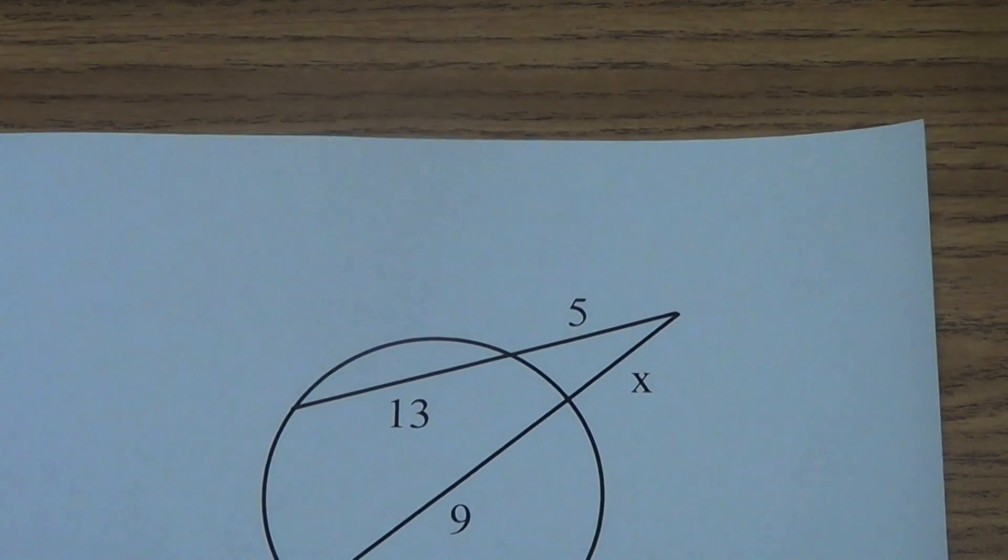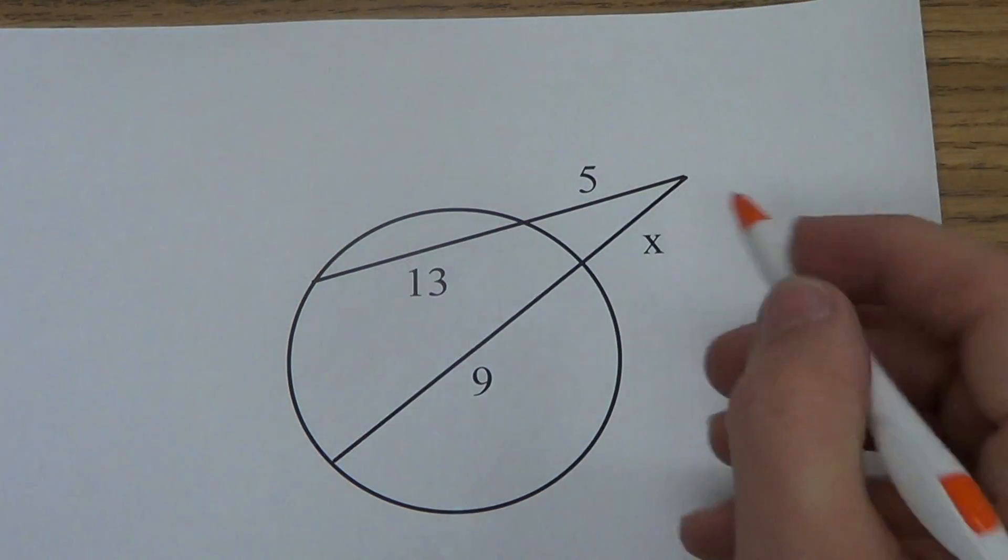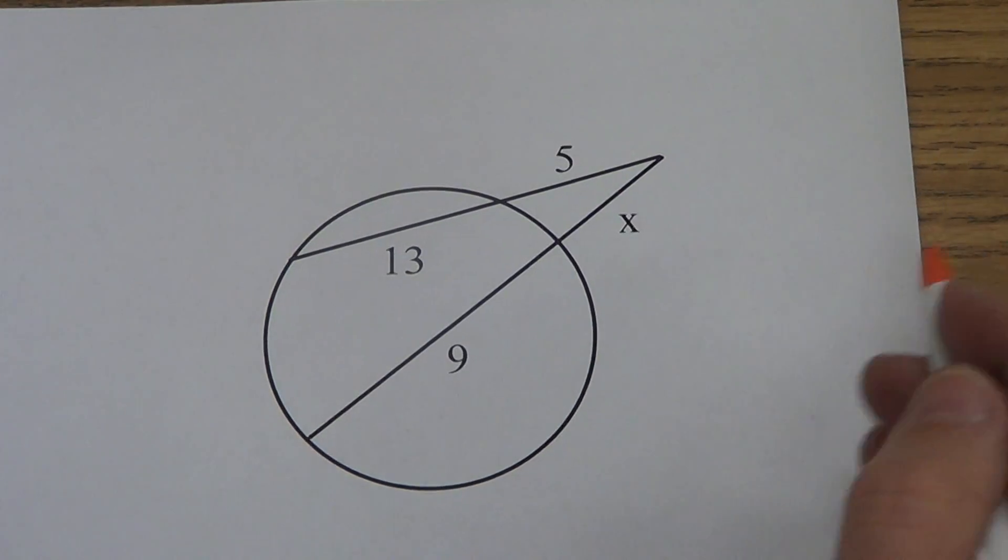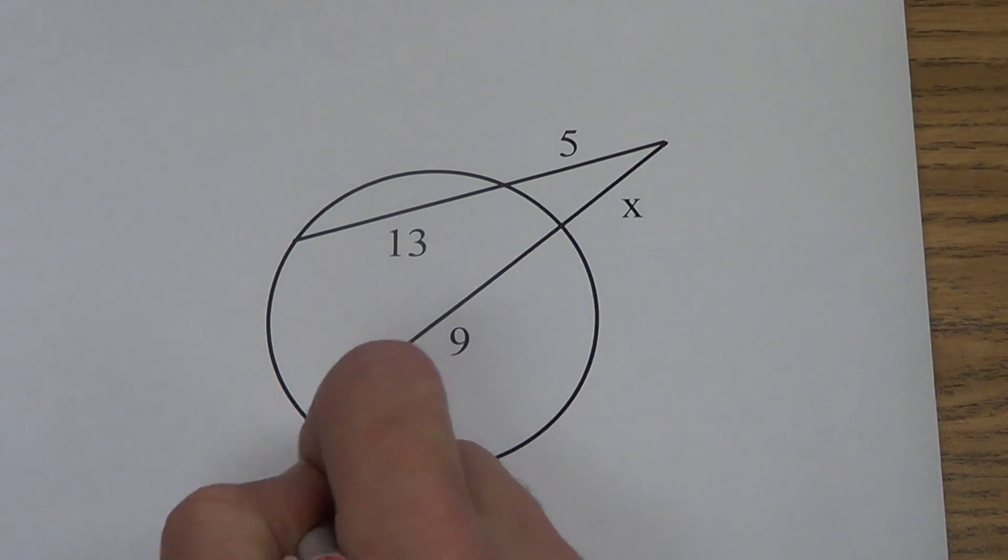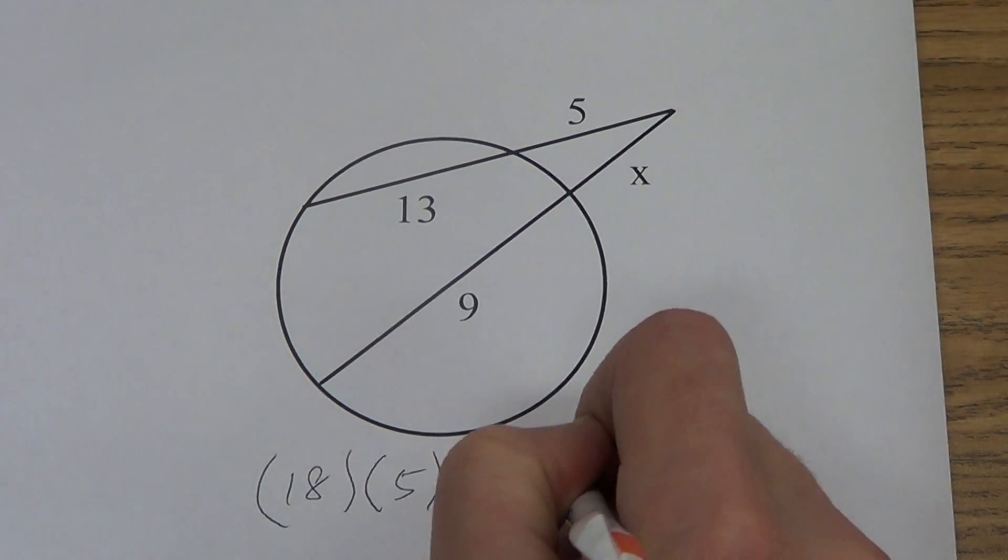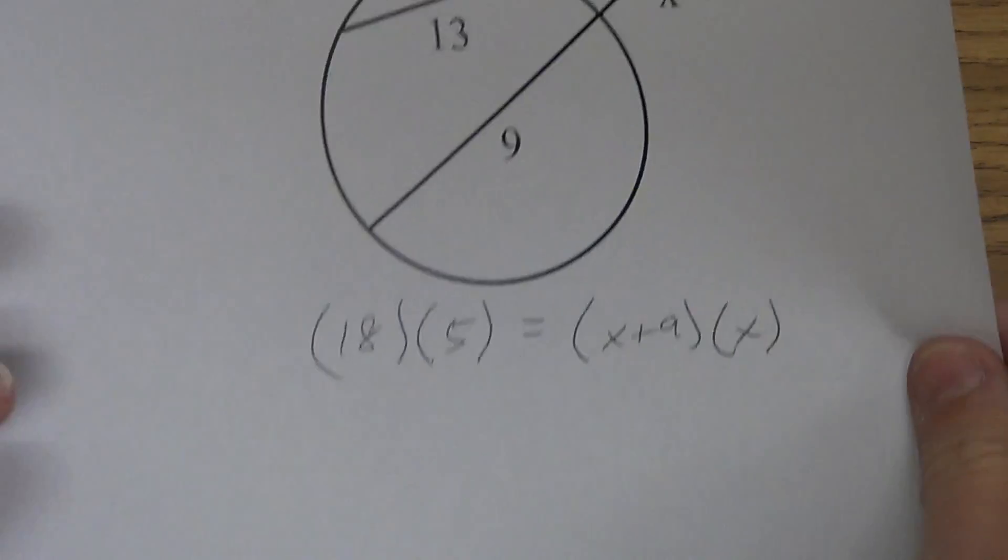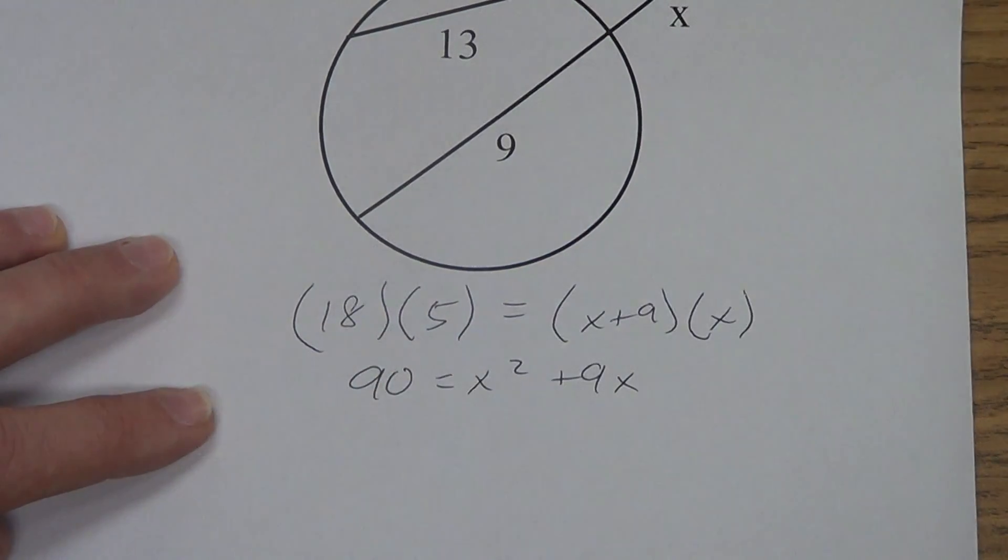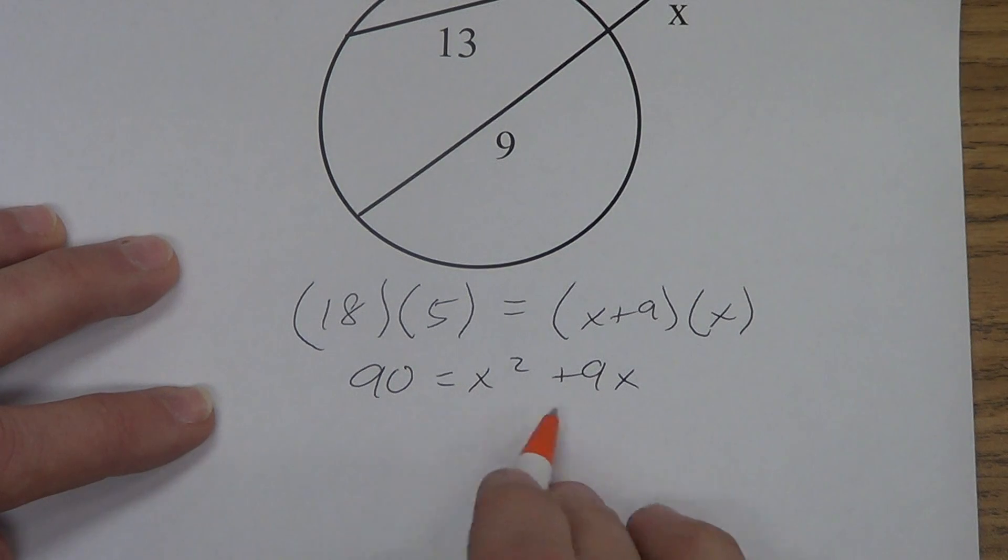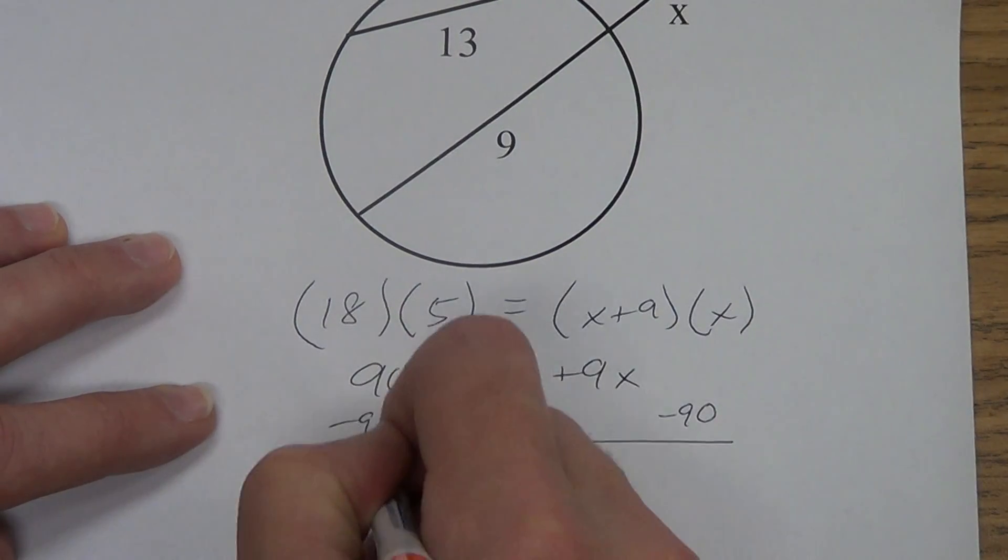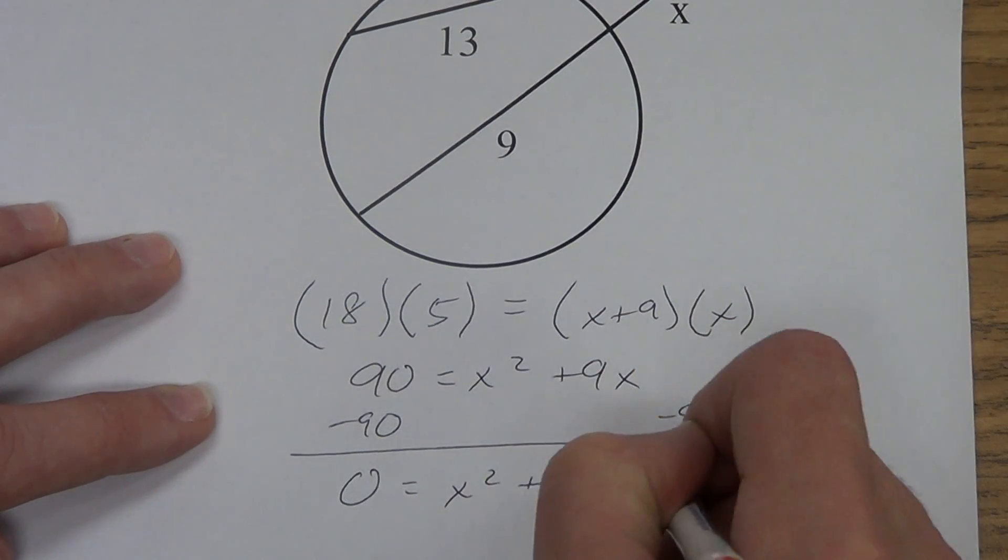All right, this one's a little harder. Anytime the x gets outside here in the external secant segment part, it gets a little bit harder. But WSS, the whole thing, 18, times the external part, 5, equals x plus 9 times x. 90 equals x squared plus 9x. We can't do this by just taking a square root or something like that. So, what we need to do is we need to bring the 90 over to here. So, we're going to subtract 90. It's going to say 0 equals x squared plus 9x minus 90.